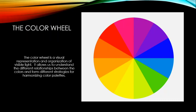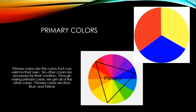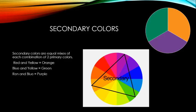First we have our primary colors: red, blue, and yellow. Primary colors exist on their own — no other colors are needed to create them. They are pure hues, and all other colors are created by mixing these primaries. Secondary colors are equal 50/50 mixes of two primaries: orange (red + yellow), green (blue + yellow), and purple (red + blue).